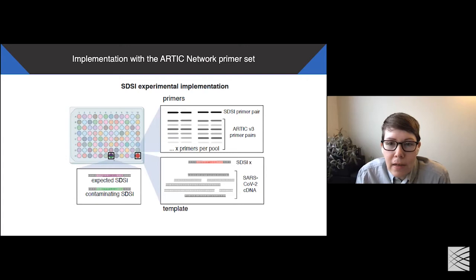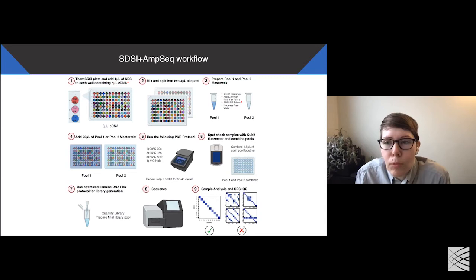This would allow us to amplify both the SARS-CoV-2 genetic material and the SDSI simultaneously. If two SDSIs, or the incorrect SDSI, is then detected during sequencing, that individual sample can be removed from analysis. We term this approach SDSI plus AMSeq. The entire workflow begins from cDNA generated from that NP swab and tracks the samples during the amplification stage where the highest risk contamination occurs. SDSIs are added into the cDNA. The sample is split into two for each primer pool. 35 to 40 cycles of PCR are done, and then after amplification the pools are combined. The libraries are quantified, pooled, and put on a sequencer. The addition of the SDSIs adds minimal extra cost and time to the already existing workflow.